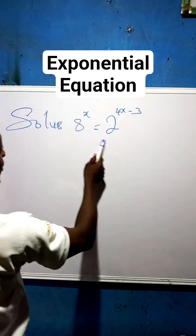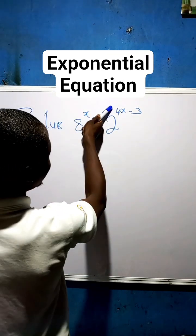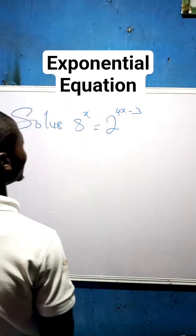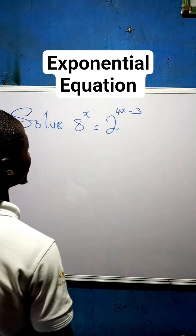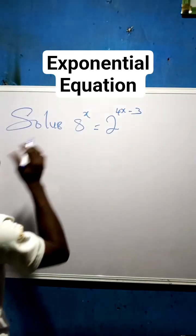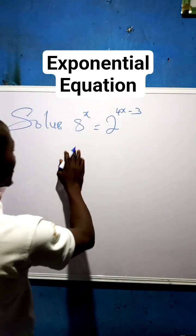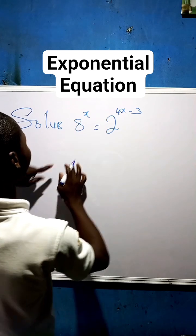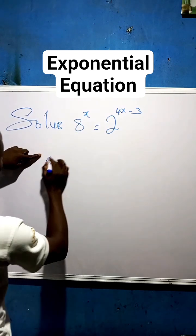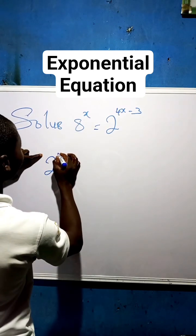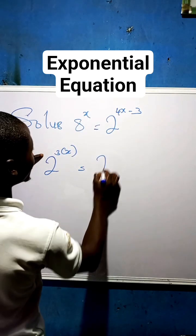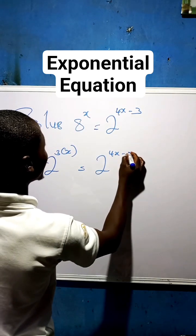Solve 8 to the power of x equals 2 to the power of 4x minus 3. The first thing we do is rewrite 8 as a power of 2. So instead of 8, we use 2 to the power of 3, giving us 2 to the power of 3x, equal to 2 to the power of 4x minus 3.